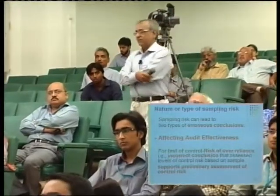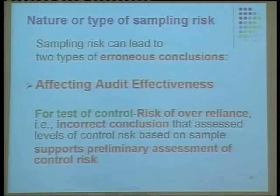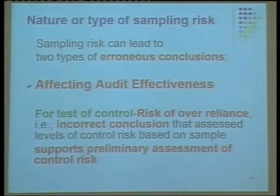In the context of internal controls, we say that our risk assessment is confirmed on the basis of a sample, but actually it is not. Similarly for substantive procedures, we say that the financial assertion — whether stock, data, or plant and machinery — is fairly stated, but if we apply the procedure to the entire population it is not. This is called a risk affecting audit effectiveness, and it is very dangerous because when the result says everything is fine, we forget and move ahead.